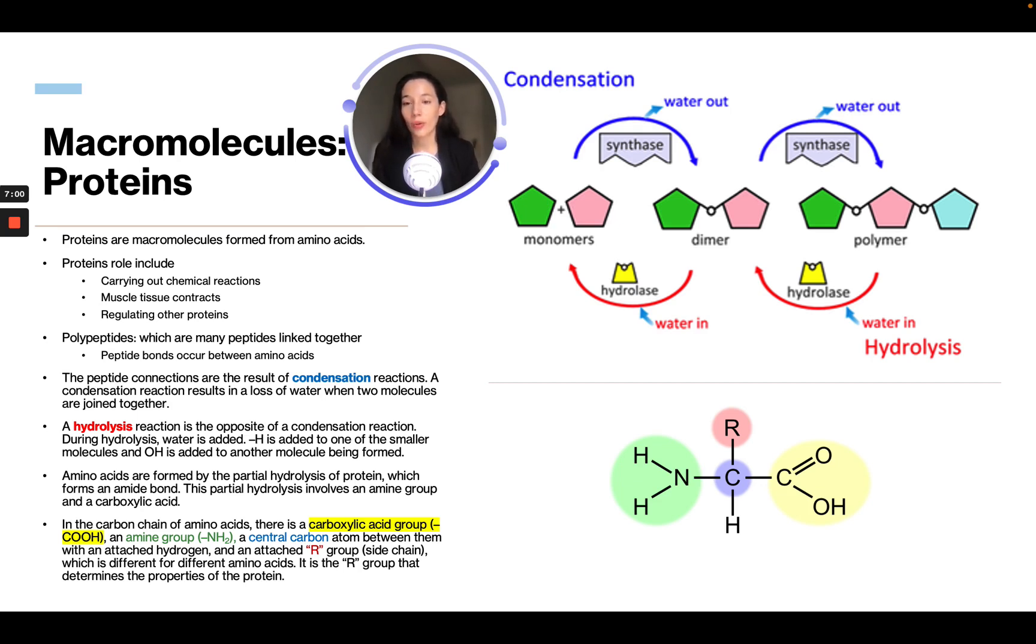Amino acids are formed by the partial hydrolysis of proteins, which form an amide bond. The partial hydrolysis involves an amine group. Going back to condensation reactions, which results in a loss of water when two molecules are joined together. We see condensation, they're losing water, water out. In hydrolysis, the water is coming in. So those are the two different reactions.